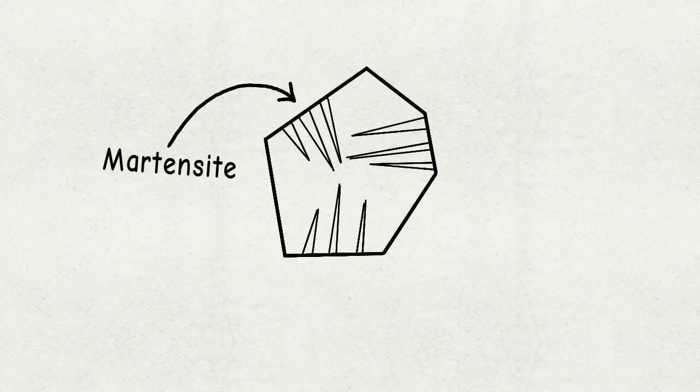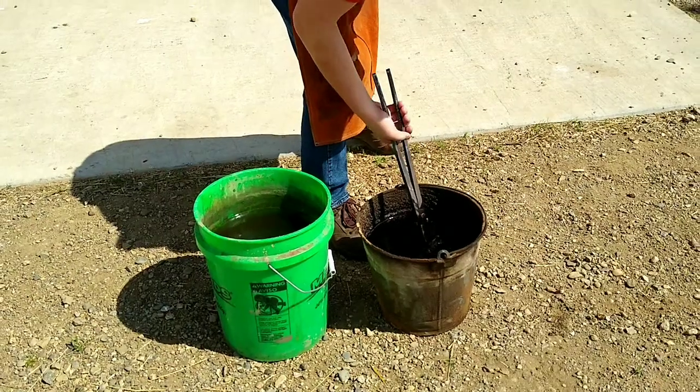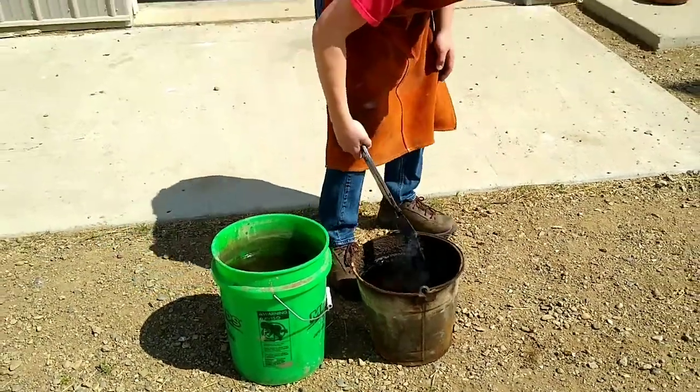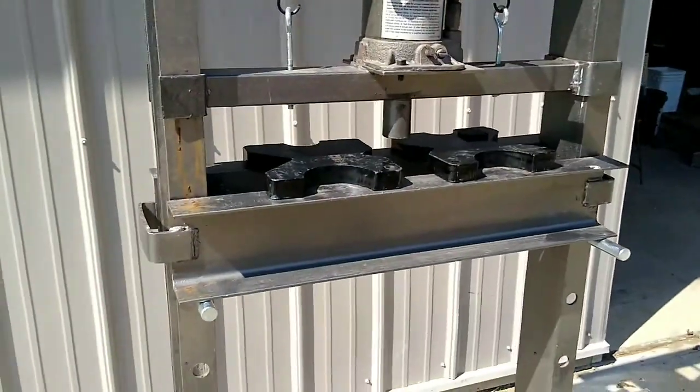Small spikes begin to form in the grains as it cools. This makes the steel extremely brittle, which isn't desirable for any application.